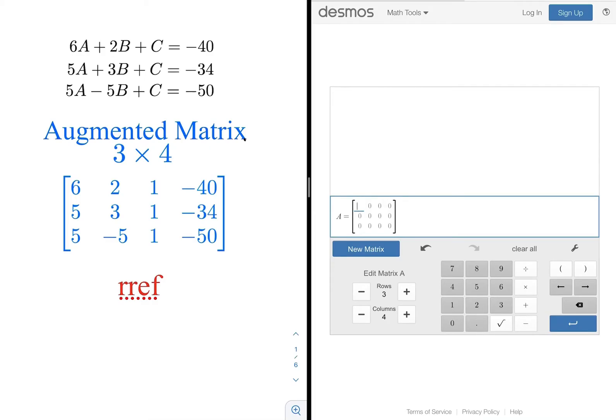So to go from value to value, just type in 6 right arrow, 2 right, 1 negative 40, just keep tapping right as you enter each value: 5, 3, 1, negative 34, 5 negative 5, 1 negative 50.